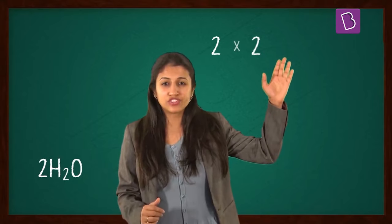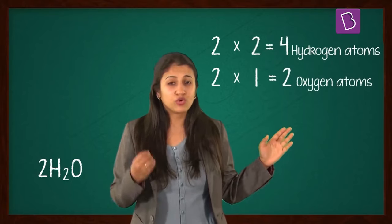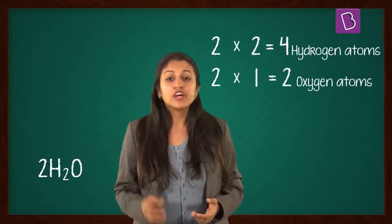In 2H2O, there are 2 into 2 atoms of hydrogen, that is total 4, and 2 into 1 atoms of oxygen, that would be a total of 2.